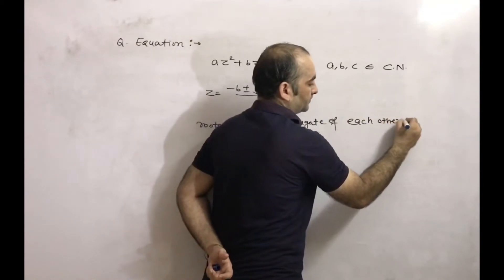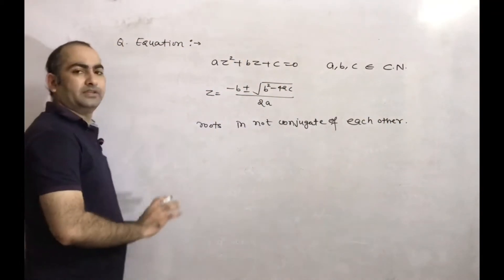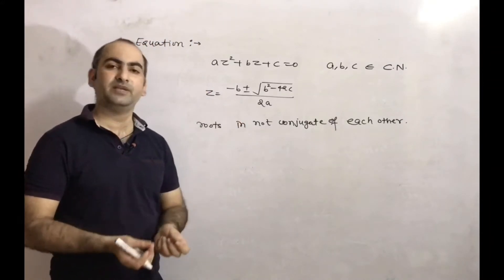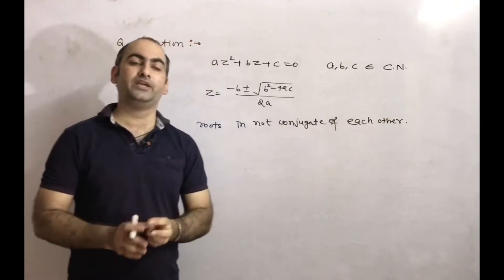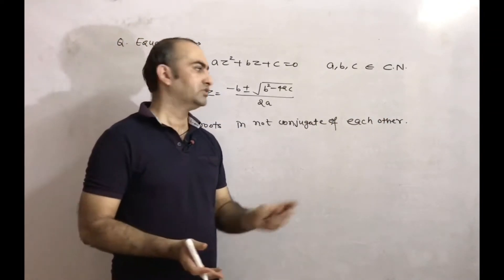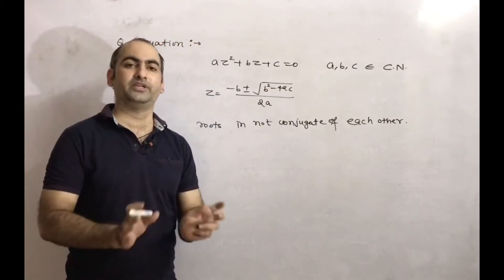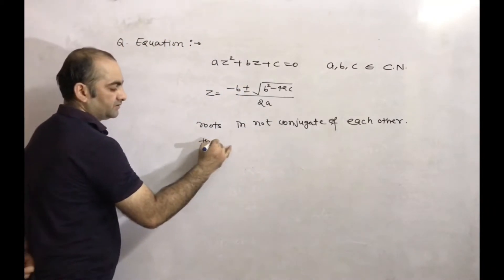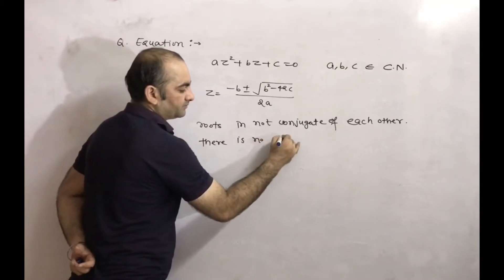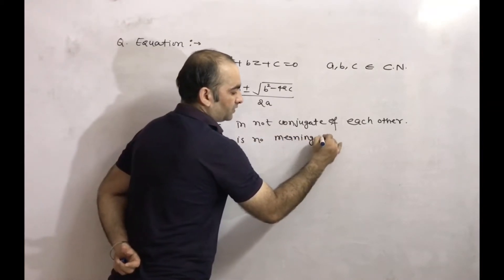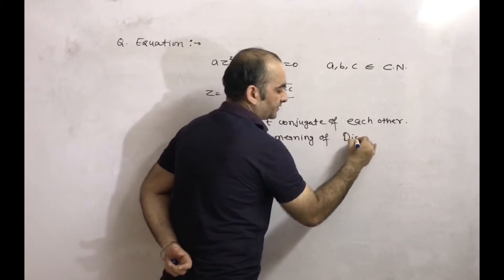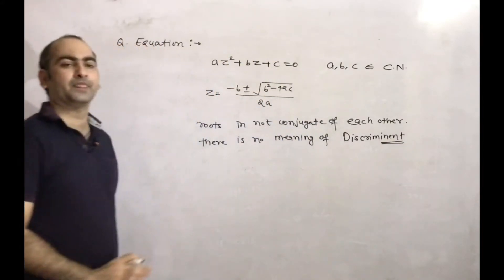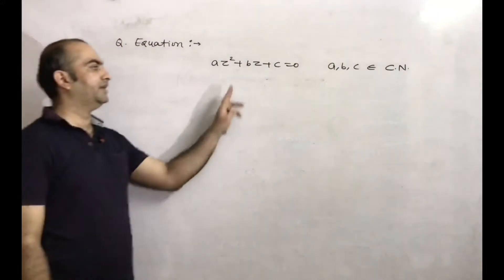The second important point is that there is no meaning of discriminant here, because a, b, c are complex numbers. So the roots are imaginary only. Whether b² - 4ac is negative or positive, we don't care, because the roots will be imaginary regardless. So there is no meaning of discriminant in this case.